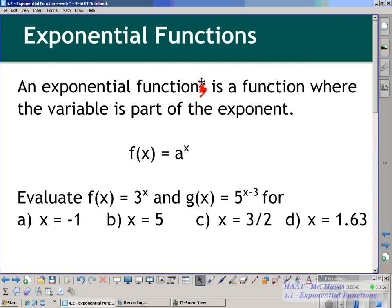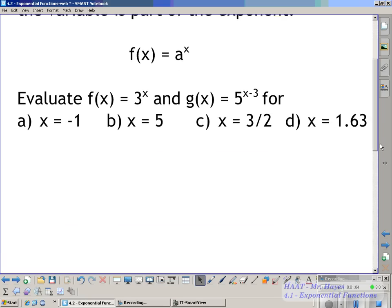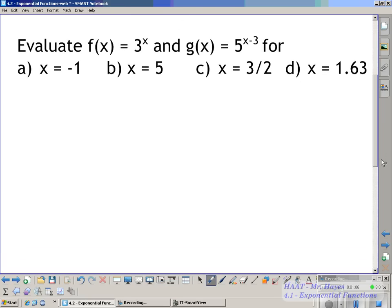So what they're going to end up asking you to do is they're going to say things like functions, and it's just, again, so you can just get the basics down on how to do it. So evaluate f(x) when f(x) is 3 to the x power and when g(x) is equal to 5 to the x minus 3 power for each of these different values. And so what you would just simply end up doing here, f of negative 1 is just going to be 3 to the negative first power, so that's going to be 1 third.